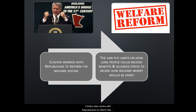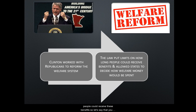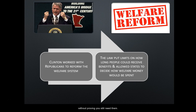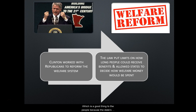Clinton also works with Republicans to reform the welfare system. He puts laws and limits on how long people could receive benefits — so if you begin receiving food stamps, you can't continue to receive them indefinitely without proving that you still need them. He also allows the states to decide how that welfare money should be spent, since the states better know what their people need as opposed to the federal government.